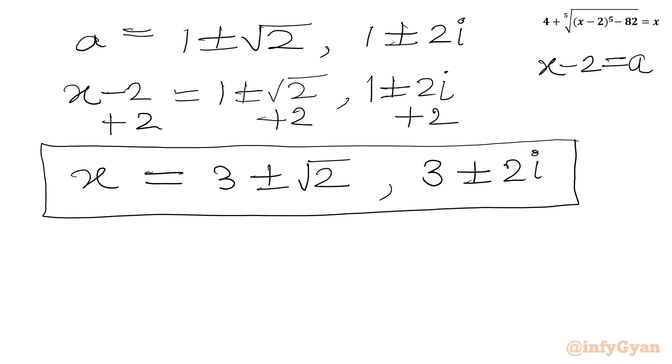So our final answer is 3 plus or minus root 2 as real solutions and 3 plus or minus 2i as complex solutions. I hope friends you will like this video. Thank you so very much for watching. Do not forget to subscribe our channel. Bye-bye till next video. Good luck. Take care.